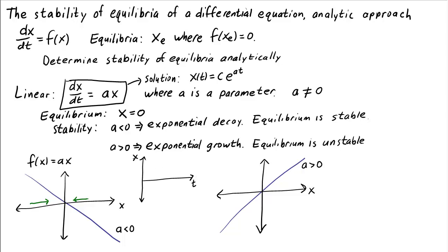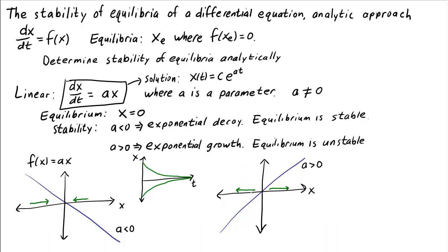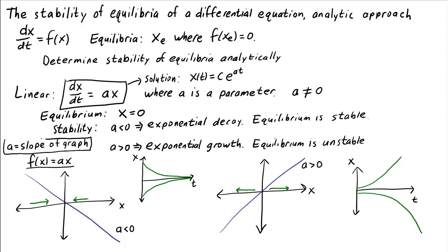A plot versus time would show decay toward 0 if the initial condition was positive, or growth toward 0 if it was negative. On the other hand, if a is positive, x moves away from the equilibrium in both directions. A key observation is that the number a is the slope of the graph of the function f of x equals ax. So the equilibrium is stable if the graph has a negative slope, and unstable if the graph has a positive slope.